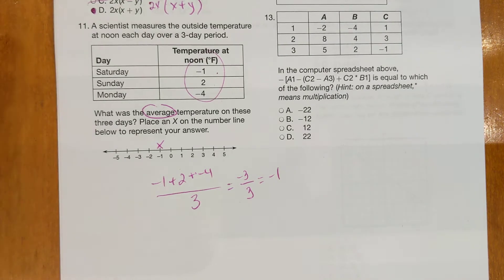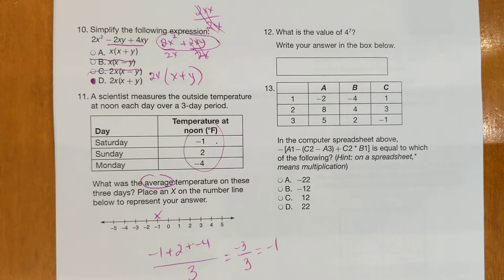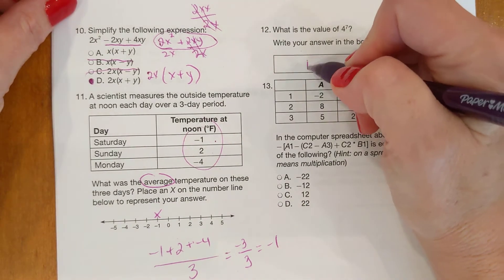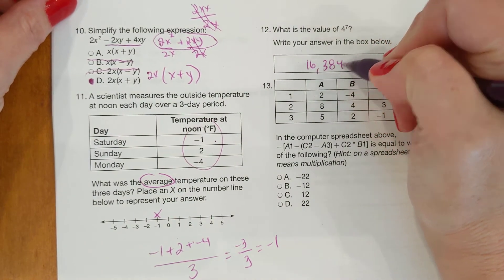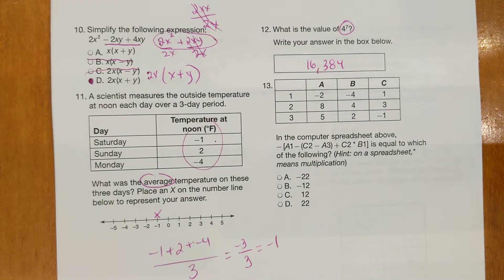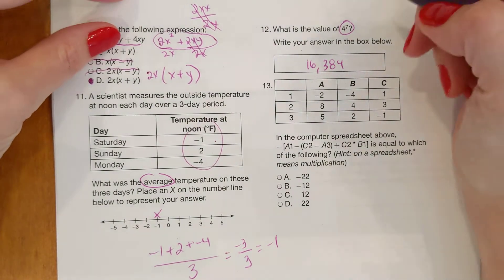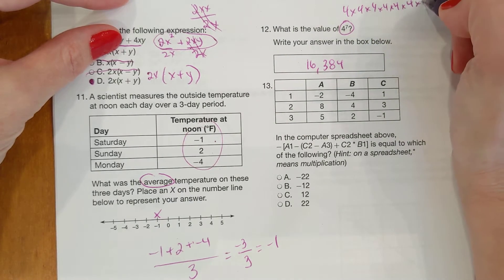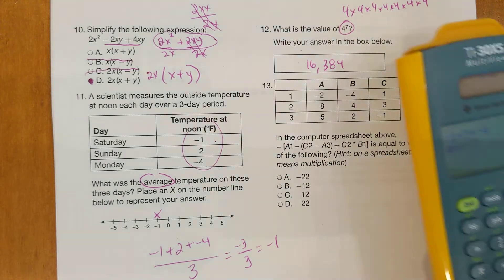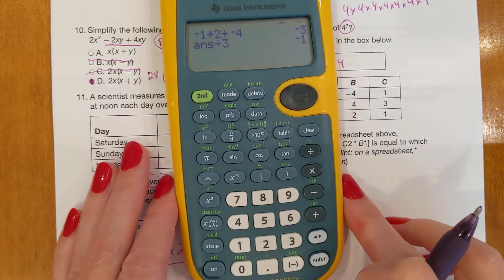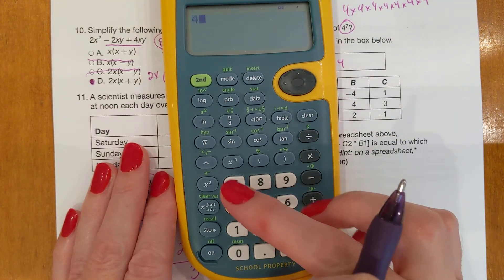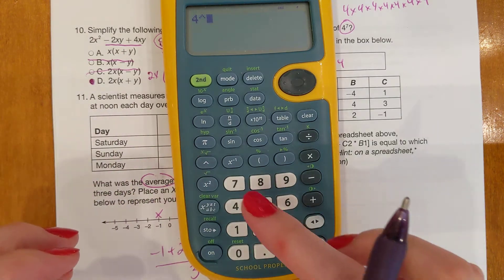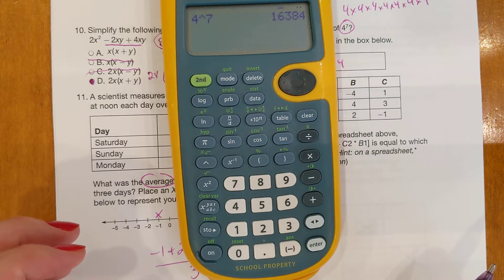Next one, number 12. On number 12, the answer you were looking at was 16,384. It's 4 to the 7th. It's not 4 times 7. It's 4, 7s multiplied together. So 1, 2, 3, 4, 5, 6, 7. So you could multiply those all together by hand, or why don't we use the caret key on the calculator? So let me hit clear here. So 4, and then the caret is diagonal from the 7. So 4 caret 7, enter, and it says 16,384.